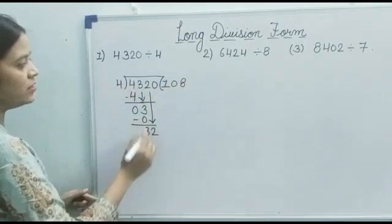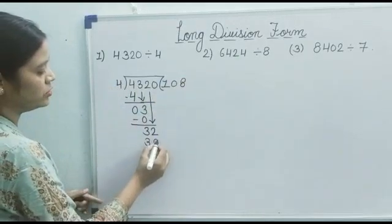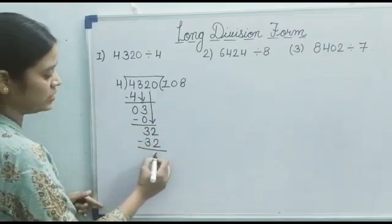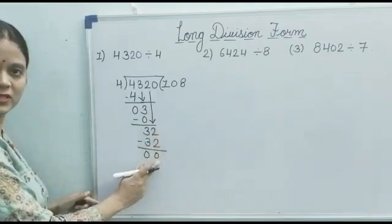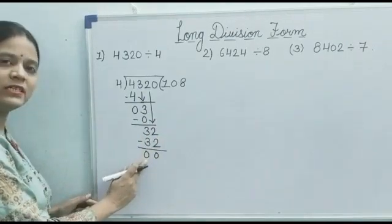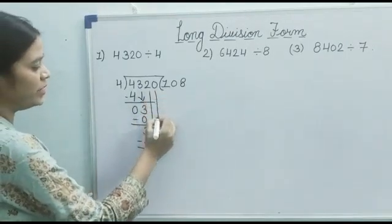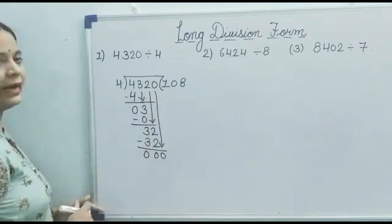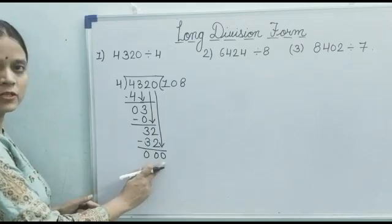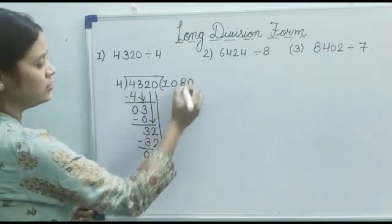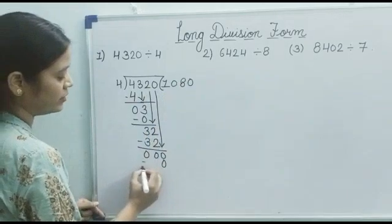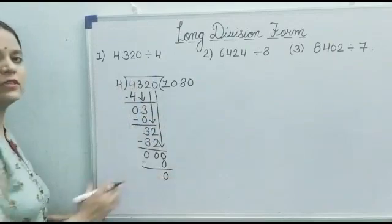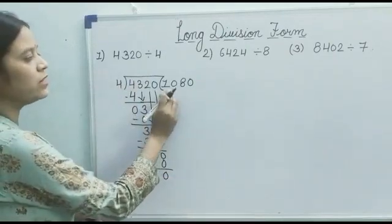Combined it is 32, and 32 comes in the table of 4 at 8 times — that is 4 eights are 32. So we write 32. Then 32 minus 32 is 0. Next we bring down the next digit, which is also 0, and we solve this 0: 4 zeros are 0. Then 0 minus 0 is 0.